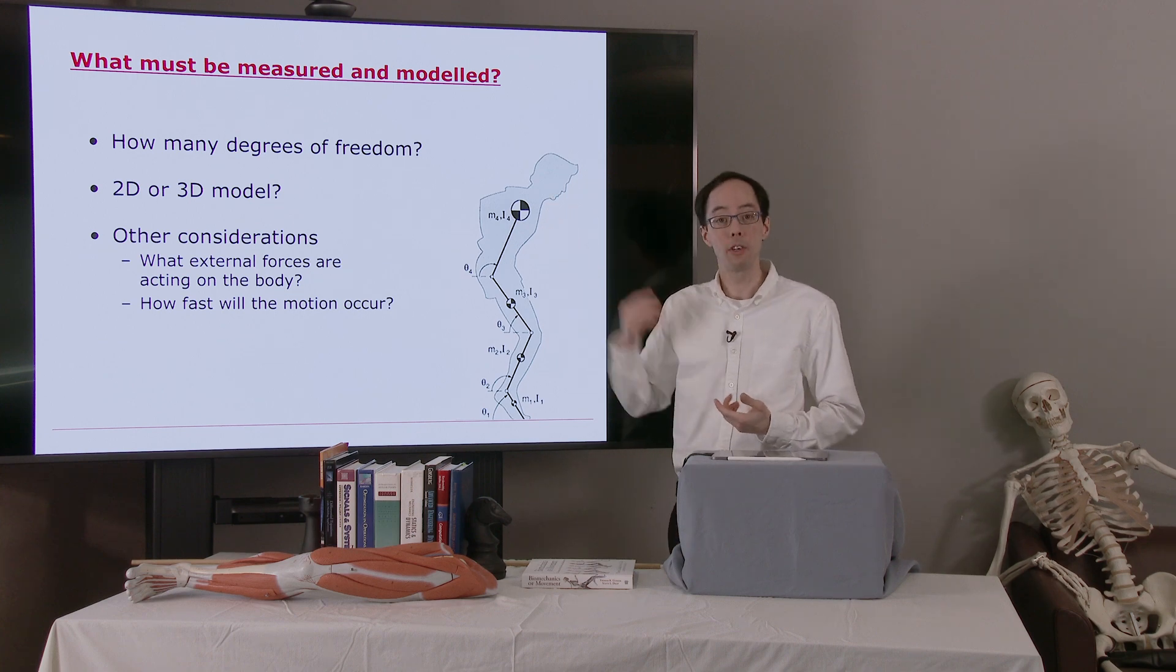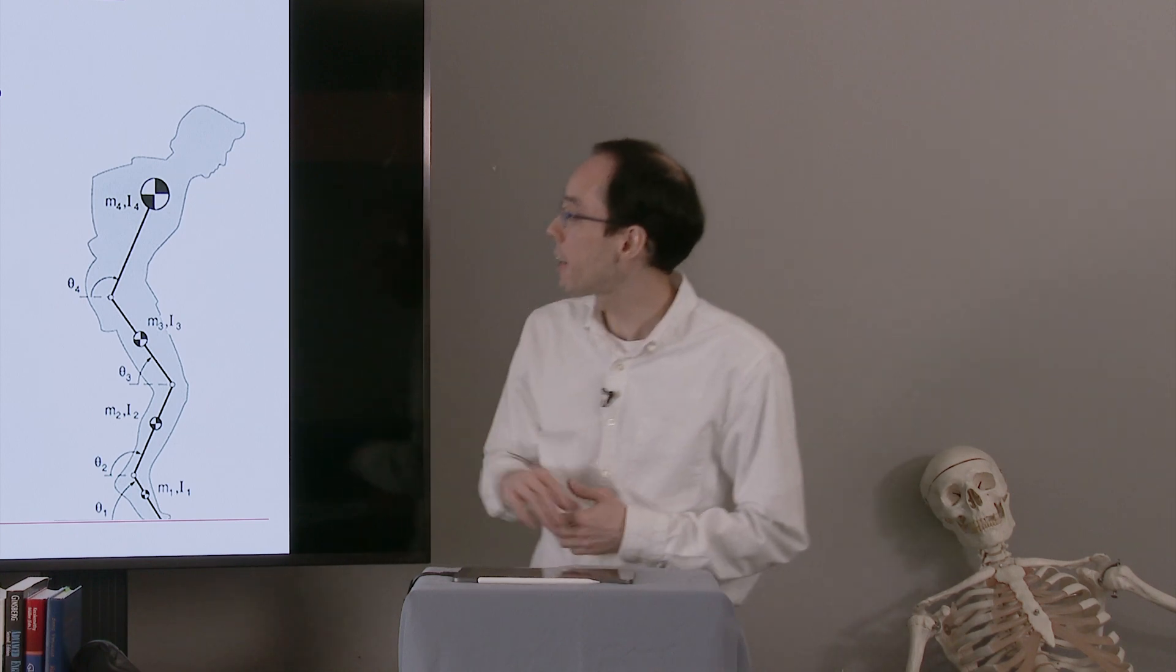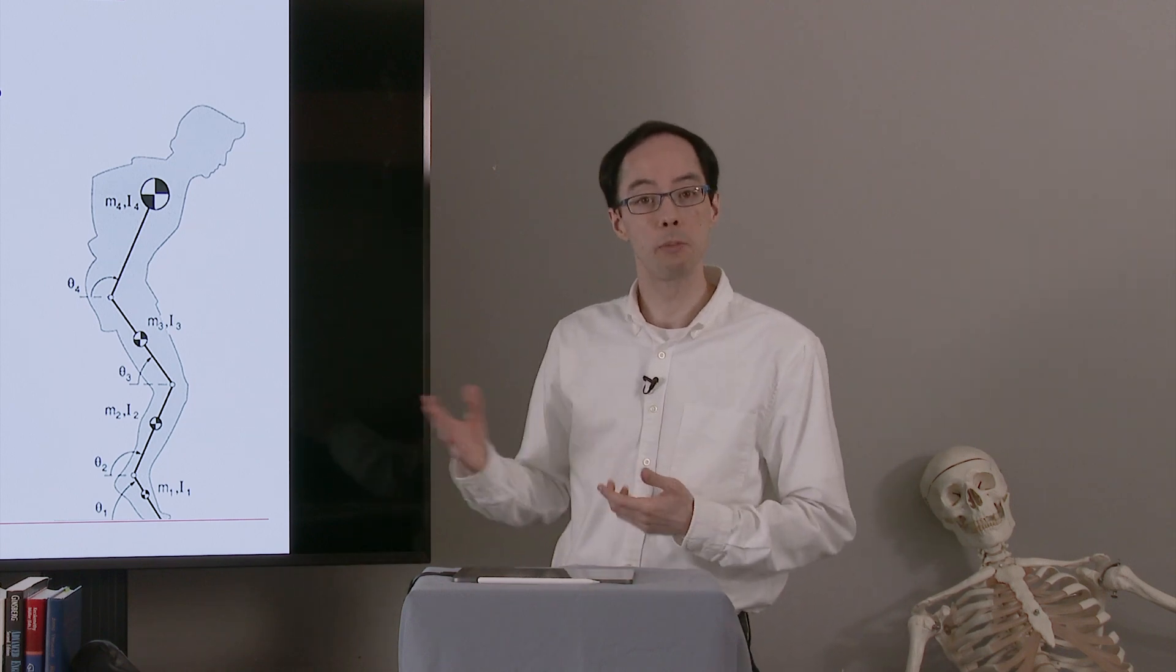One consideration is how many degrees of freedom do we need. In some cases, a very simple model, like a sagittal plane body shown here without arms, might be sufficient for studying, for example, jumping or a sit-to-stand motion.